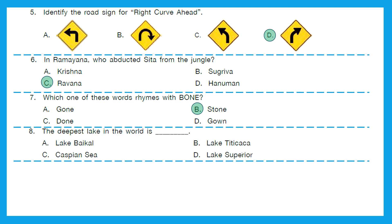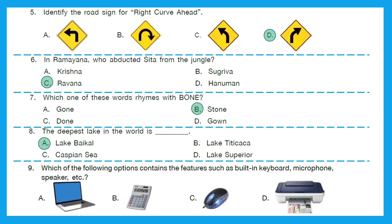Question 8: The deepest lake in the world is? The right answer is Lake Baikal, and that's in Russia. Question 9: Which of the following options contains features such as a built-in keyboard, microphone, speaker, etc.? It is your laptop. A laptop comes with a built-in keyboard, microphone, speaker and all other things. So the right answer is option A.